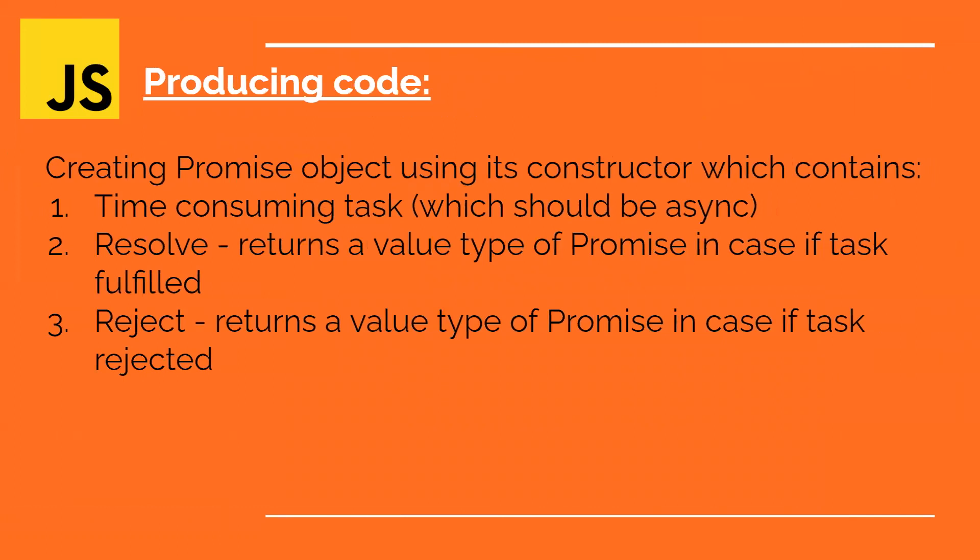So what are promises? In promises, we will have two categories: one is the producing code and another is the consuming code. We will see a little theory here so that when we jump into the code, we can clearly understand what producing code and consuming code are.